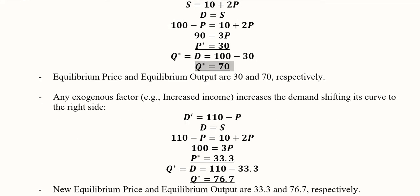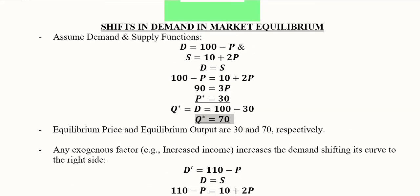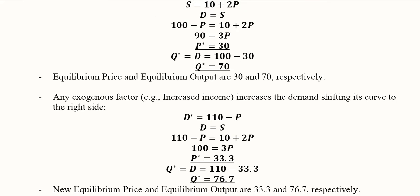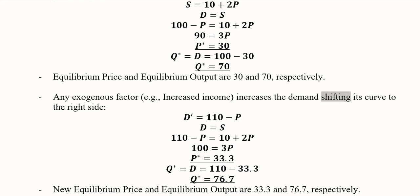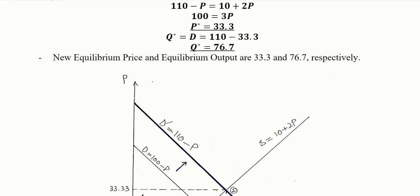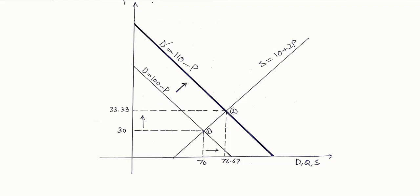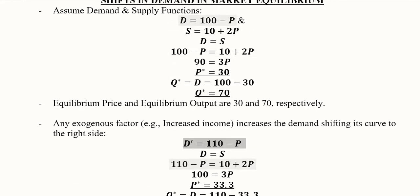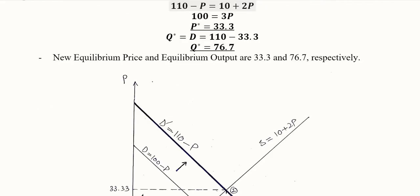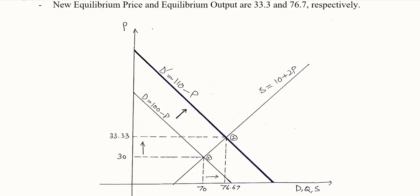These are the initial equilibrium values. Now we consider the possibility of shifts in the demand curve — shifts occur when there is an exogenous factor. Here, increased income has caused an extension in the demand function, reflected by a rightward shift of the demand curve. Mathematically, the demand function changes from 100 minus p to 110 minus p, so the intercept has increased from 100 to 110.